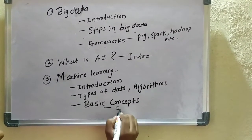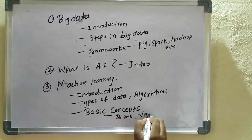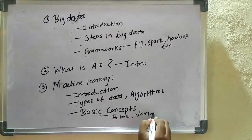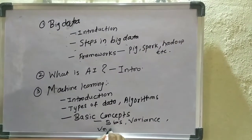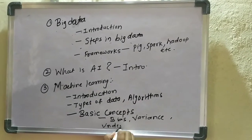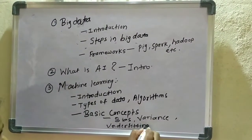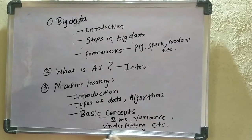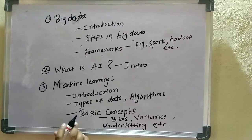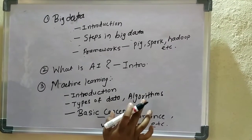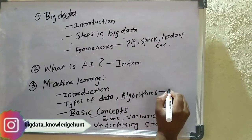I have also covered basic concepts related to machine learning such as bias, variance, underfitting, and overfitting. These are some of the core concepts used in machine learning algorithms. The links to these videos will be in the description — you can go through them.